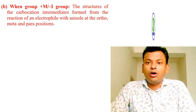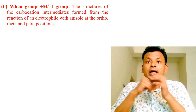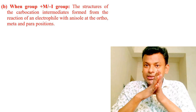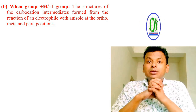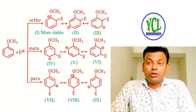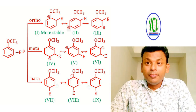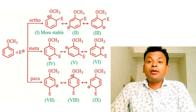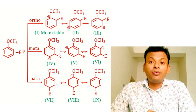Case 1B: when the group has +M (mesomeric/resonance) effect and −I (inductive) effect, such as OCH₃ (anisole). The carbocation intermediate from reaction of an electrophile with anisole at ortho, meta, and para positions shows: at ortho position, the sigma complex is stabilized through resonance structures. At meta position there is no stabilization. Para position is most stable. Since −I and +R effects are both present, ortho and para products are predominantly formed.